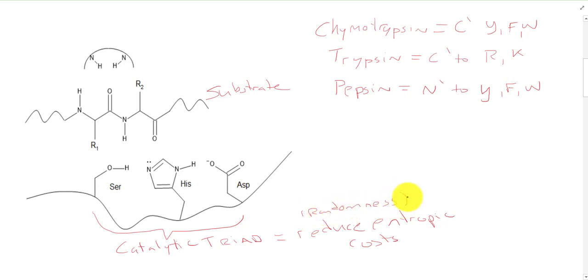If we did this in free solution, the rate of peptide hydrolysis is very, very slow. You can eat protein from a dinosaur and it's still there. It's so slow. And so, by having enzymes, specifically serine proteases, having the catalytic triad, we reduce the randomness of the system and make it much, much more efficient.